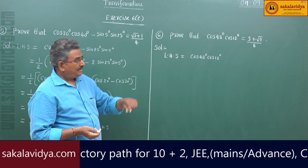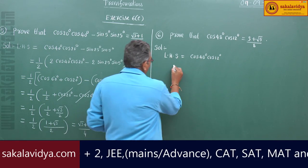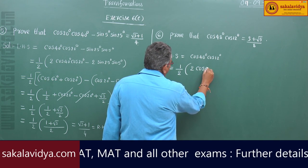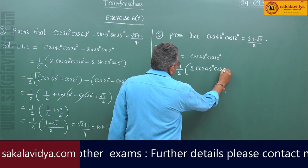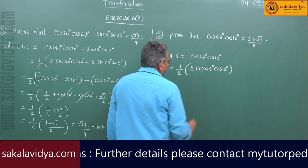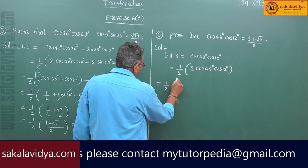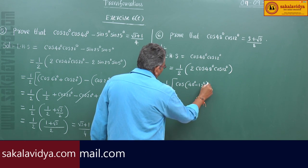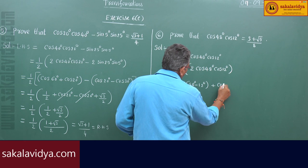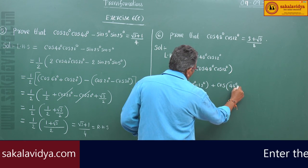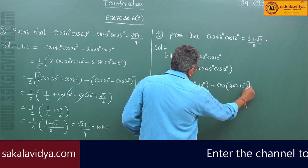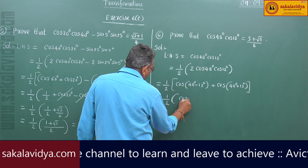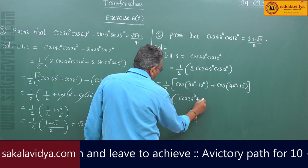If we have 2·cos a·cos b, we can directly apply the formula cos(a-b) + cos(a+b). So we multiply and divide by 2, writing it as (1/2) × 2·cos48·cos12. Applying the formula: cos(48-12) + cos(48+12) = cos36 + cos60.